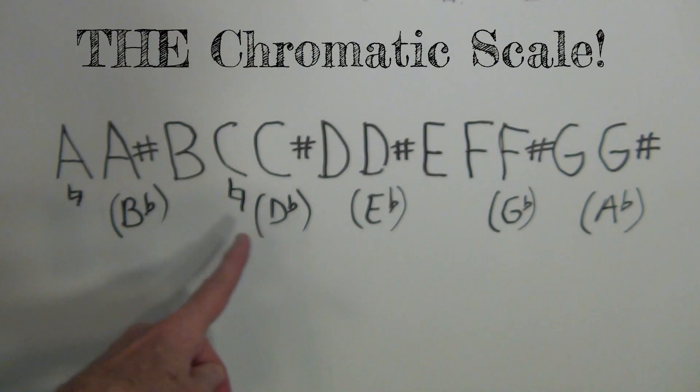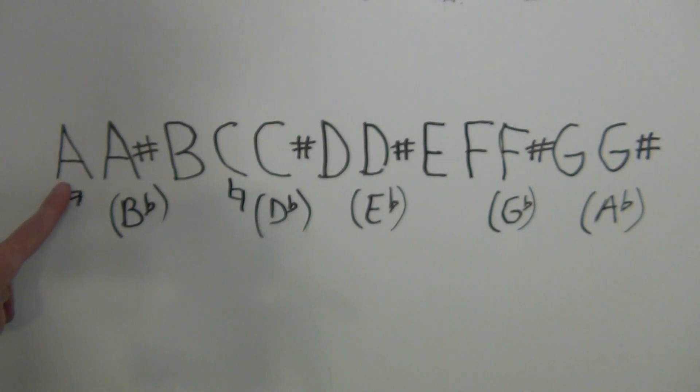This is called the chromatic scale. There's 12 notes in the scale and it represents all half steps within the scale, starting with the A. So it starts with an A, sometimes referred to as an A-natural, then A-sharp, which is also B-flat,